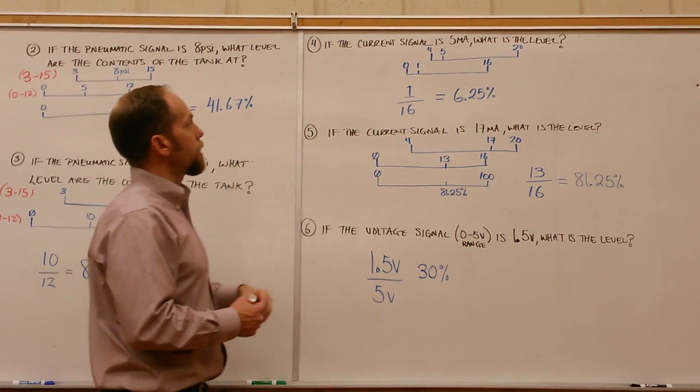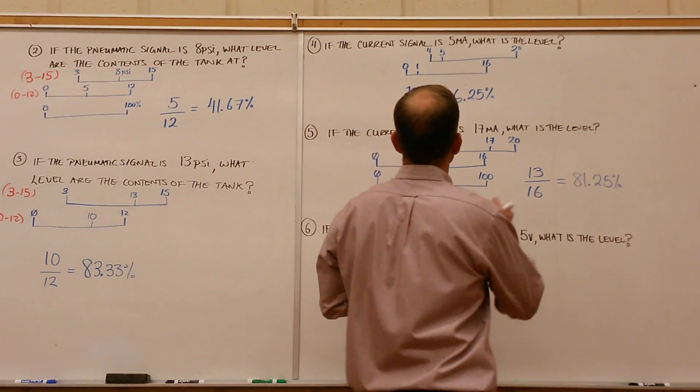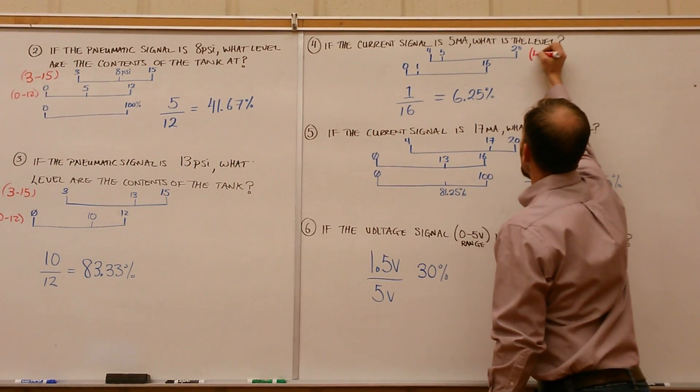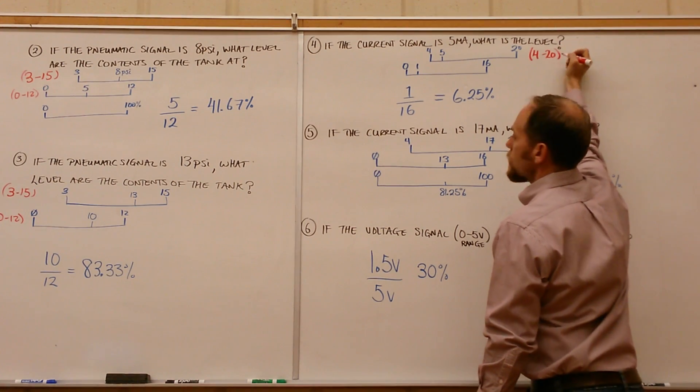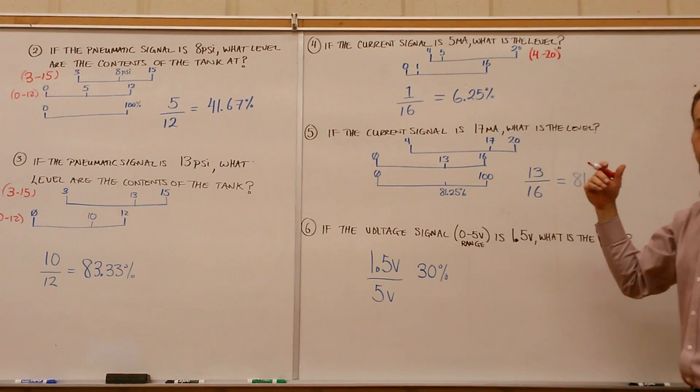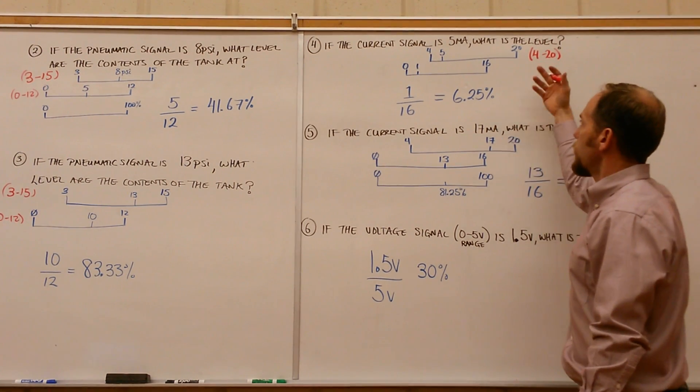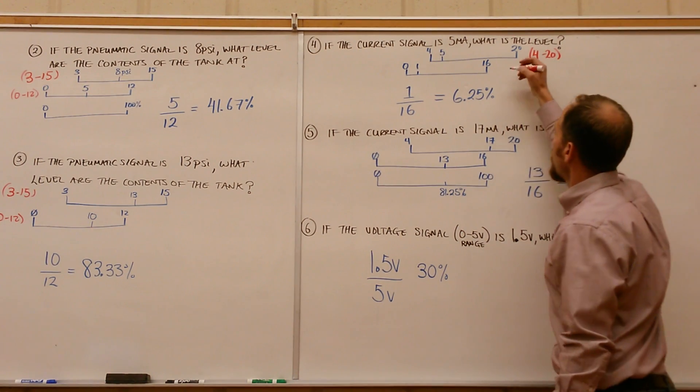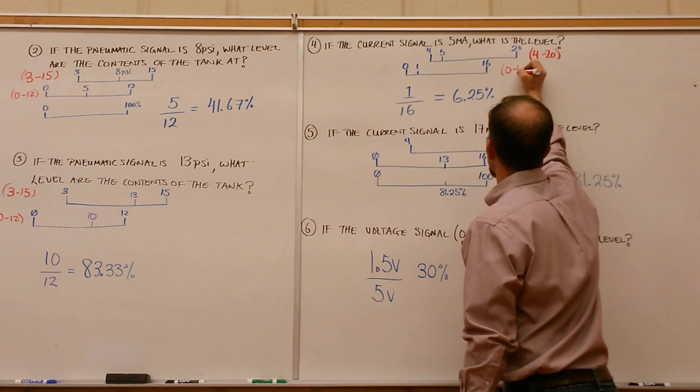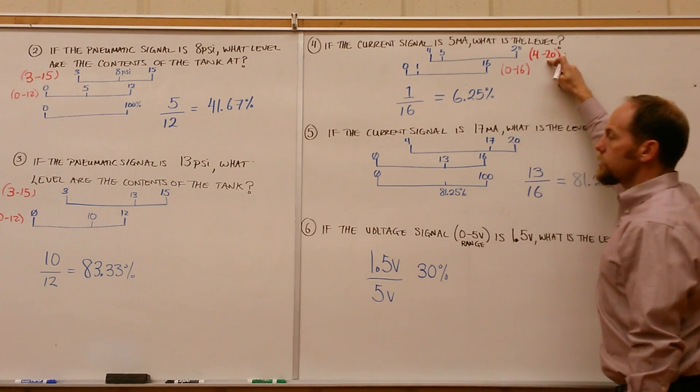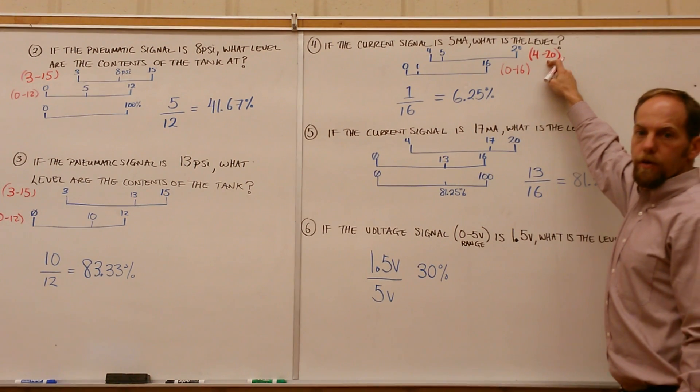Next one: if you've got a current signal, standard current signals are 4 to 20 milliamps. Again, that's an elevated 0, so we can't take 5 divided by 20. We're going to drop it down to 0 to 16, because there are 16 equal increments between 4 and 20.